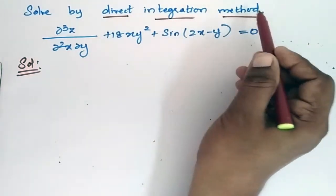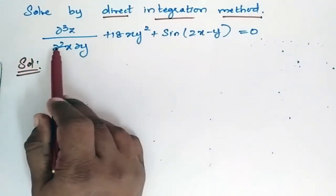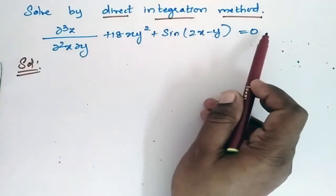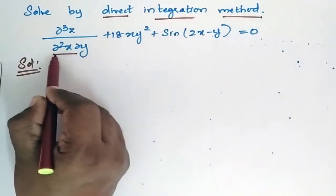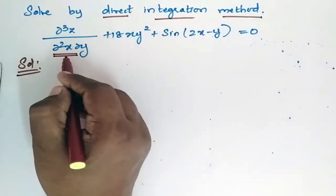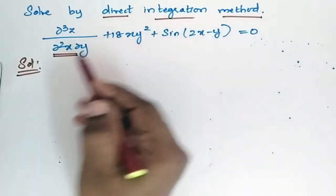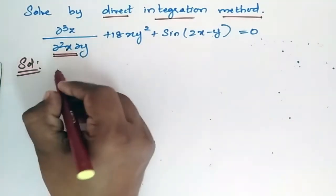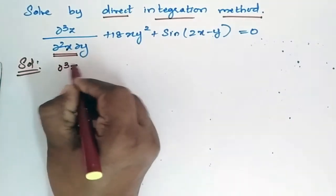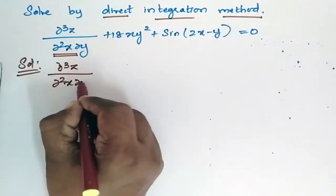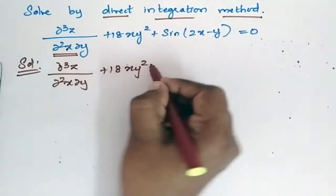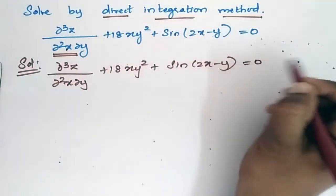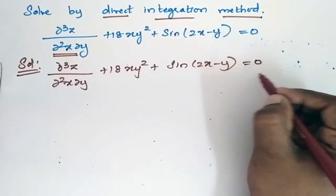Solve by direct integration method: ∂³z/∂x²∂y + 18xy² + sin(2x - y) = 0. We have to integrate and find the value of z. First, let us consider this equation, integrate with x and then integrate with y to find the value of z. Let this be equation 1.